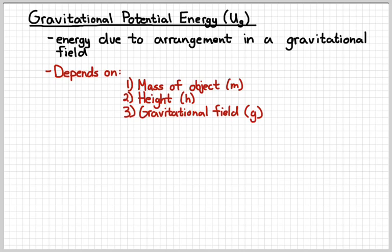Two is the height of that object relative to some reference point. And then the third is the size of the gravitational field. Remember, we symbolize that with a little g. And we combine those into an equation. You just multiply the three terms together, and you get the gravitational potential energy. Probably the simplest physics equation we'll see all year.